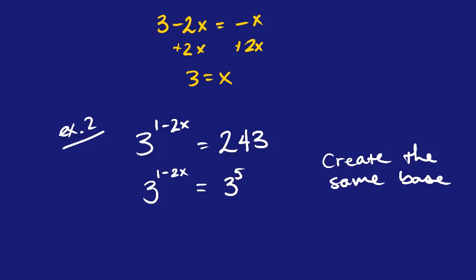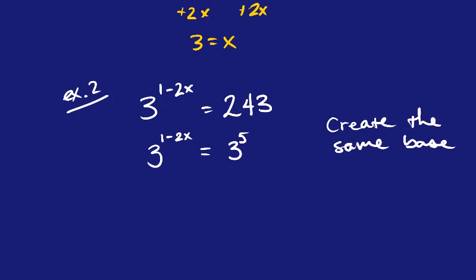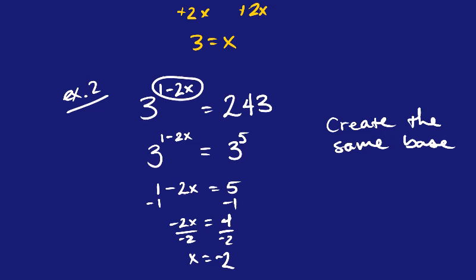And so what I can do is I can set the exponents equal to each other, so 1 minus 2x equals 5, and then we can solve it. So subtract 1, negative 2x equals 4, divide by negative 2, x equals negative 2. And if we want to check our answer, we could. You'd take x equaling negative 2 and plug it into the original way up here. And so if you put negative 2 in for x, that would make 4, and so 1 plus 4 is 5, and 3 to the 5th is 243. So your answer is right here, x equals negative 2.